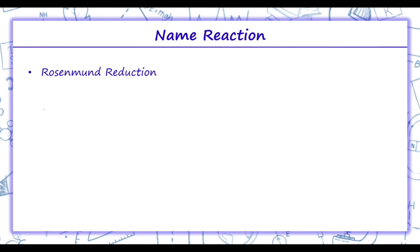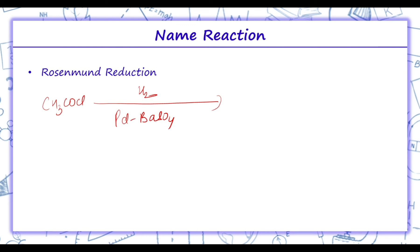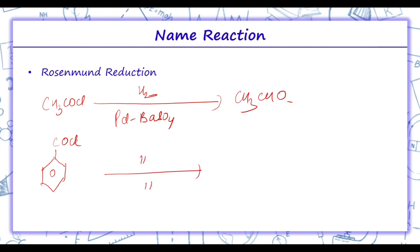Next is Rosenmund reduction. This reaction is shown by acid halides like CH3COCl — acyl chlorides are hydrogenated using hydrogen over a catalyst of palladium on BaSO4. The acid chloride group changes to CHO. The same reaction can be performed with aromatic acyl chlorides, converting the COCl group into a CHO group. We studied this in the preparation of aldehydes.